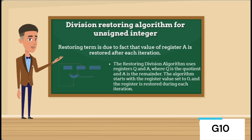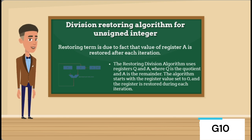To sum it up, the restoring division algorithm uses registers Q and A, with A being restored after each iteration. This process guarantees precise quotient and remainder calculations.